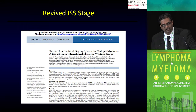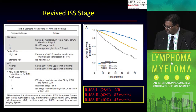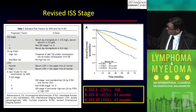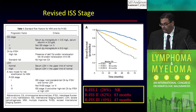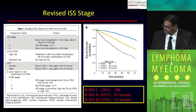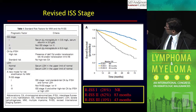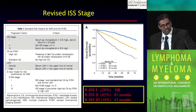One key piece of information is the revised ISS stage, which just came out in JCO in August of this year. They looked at ISS stage 1, 2, or 3 and incorporated two factors: cytogenetics by FISH — high risk being deletion 17p, 4;14, or 14;16 — and LDH level. Revised ISS stage 3 is patients with ISS stage 3 disease with high-risk cytogenetics or high LDH. Revised ISS stage 1 is patients with ISS stage 1 without any high-risk cytogenetics. With revised ISS stage 1, median overall survival has not been reached; stage 2 is 83 months; and stage 3 is 40 months.